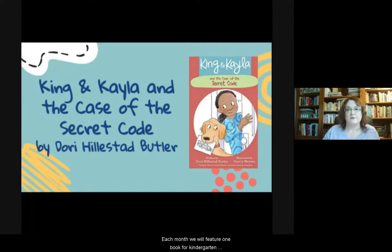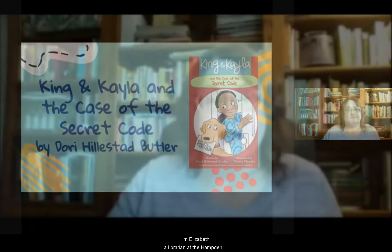Each month we will feature one book for kindergarten through second grade and one book for grades three through five. So keep checking back for new videos. Hi, I'm Elizabeth, a librarian at the Hampden Branch of the Denver Public Library. And I'm April. I'm a librarian at the Green Valley Ranch Branch.